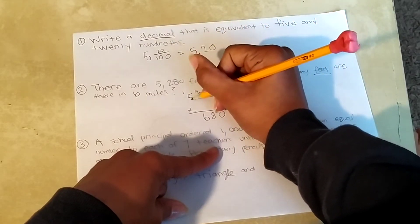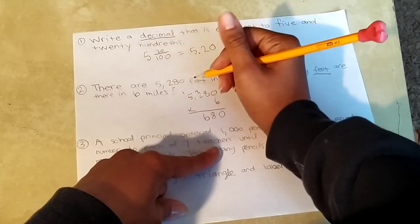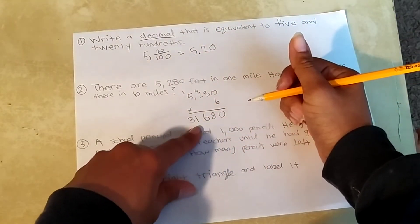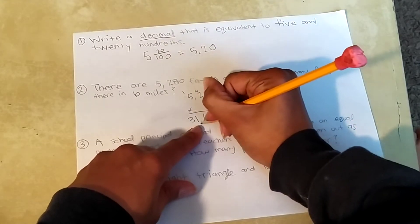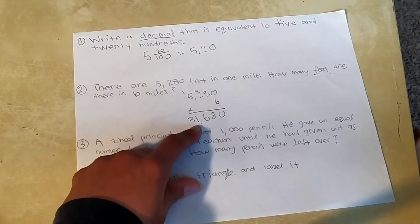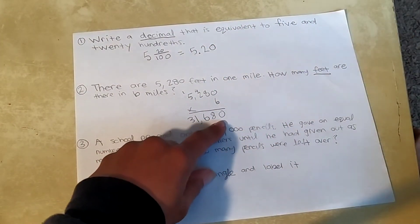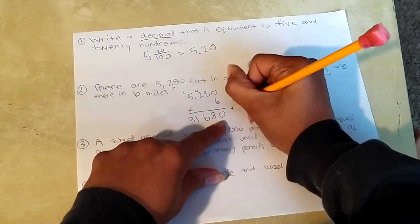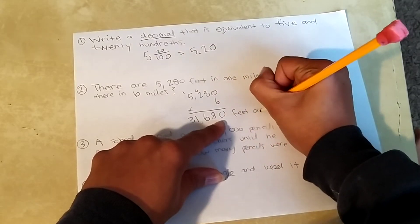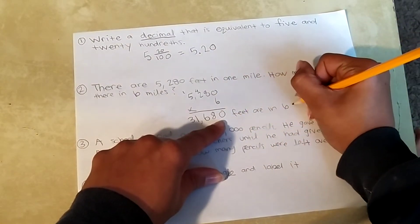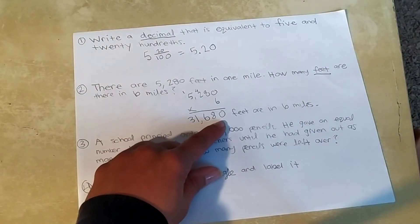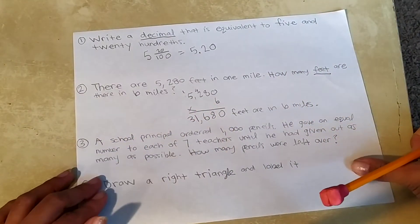Six times five is 30. Plus one, 31. Okay. I have this big number here. Put my comma in. 31,680 feet are in six miles. That's a lot of feet. Okay, let's move on.